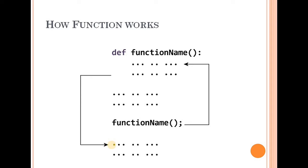I have a picture representation of how a function works. First, you define the function name. Then you call the function name. When the function is called, the code inside it executes. After the function finishes executing, control returns to the point where it was called. That is how a function works.